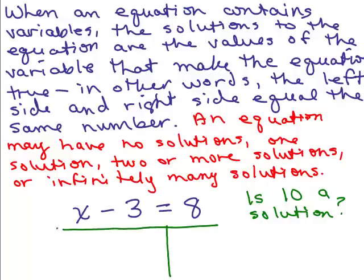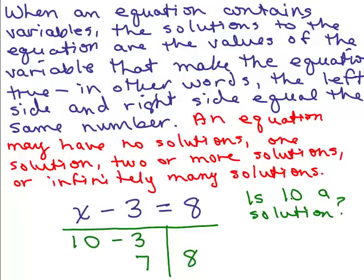In general, what I like to do is underline the entire equation and draw a vertical line under the equal sign, making a T-shape — the left side might be more or less than the right side. Then we plug in the number for x. So I have 10 minus 3 and simplify: 10 minus 3 is 7. On the right, there's no variable so we simply write 8 and compare. The left side is 7 and the right side is 8, so it does not give the same value on both sides. The answer is no.